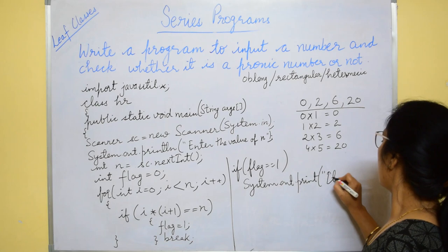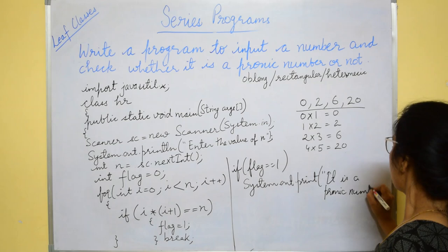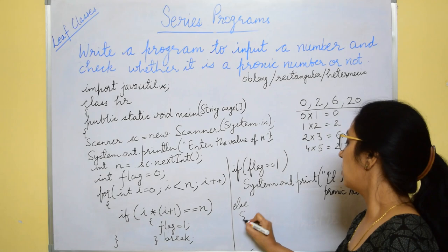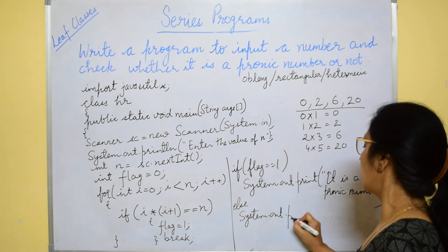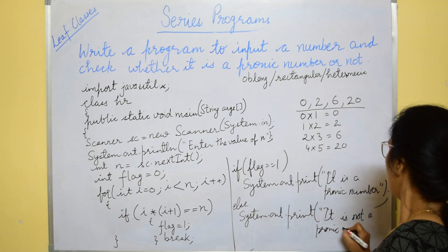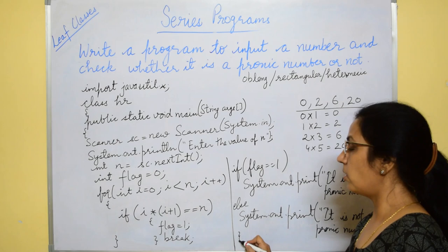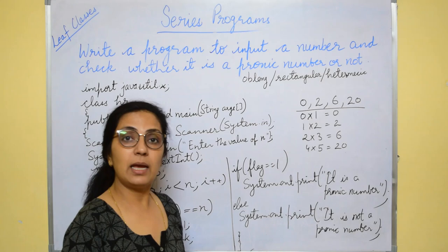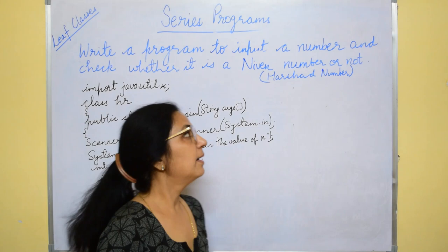Else if not one, that means it is not a pranic number, you will print it is not a pranic number and then you close your main and you close your class. I hope this program is clear, any doubt, any problem, you please comment, I will answer your question in the comment box.